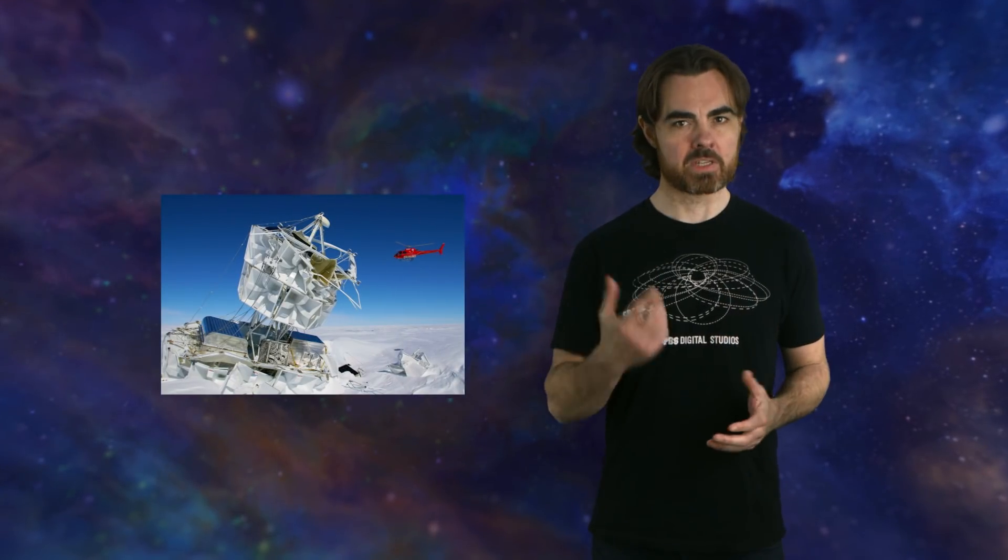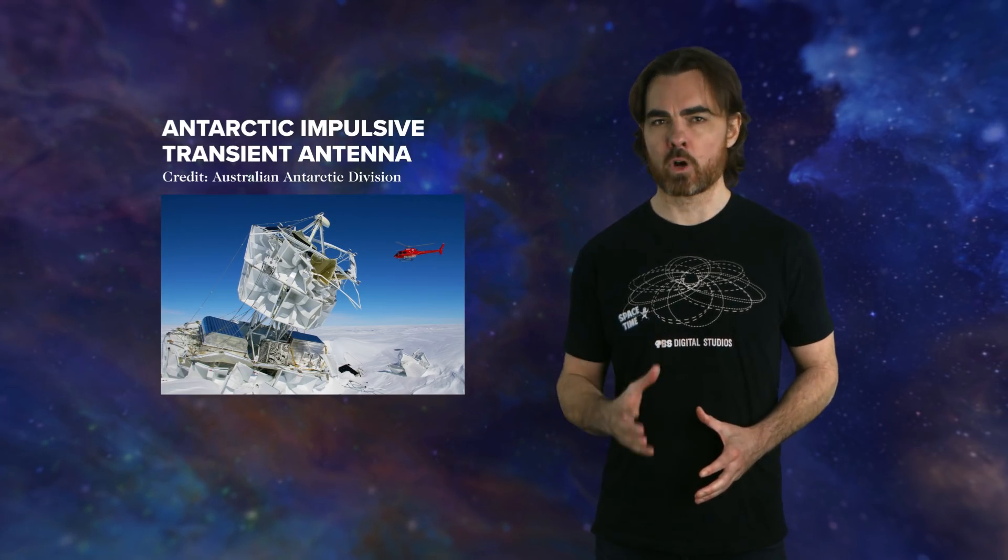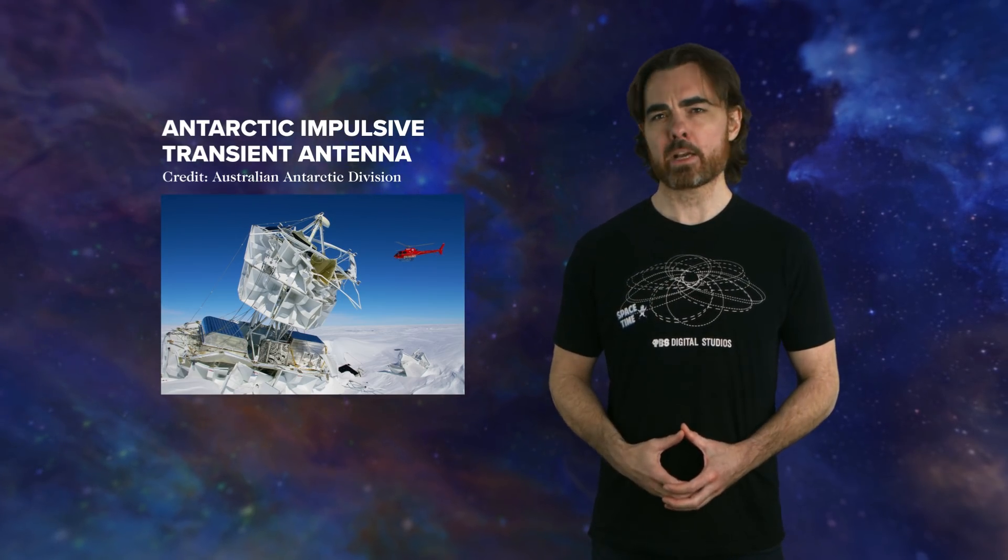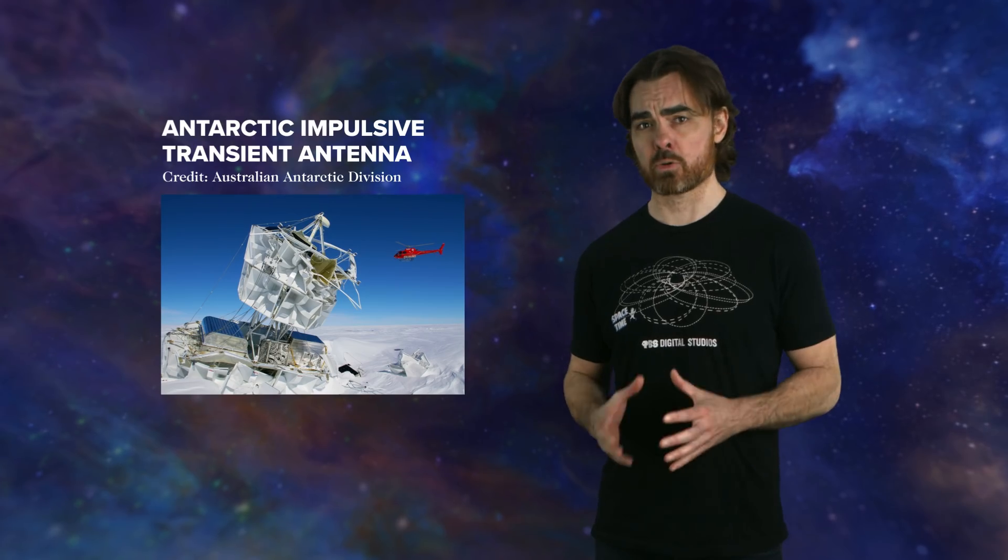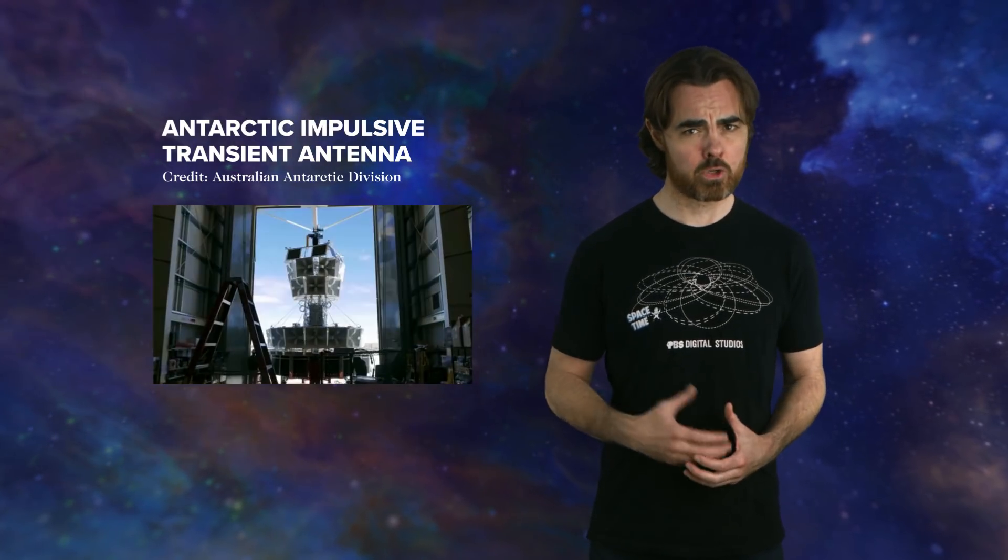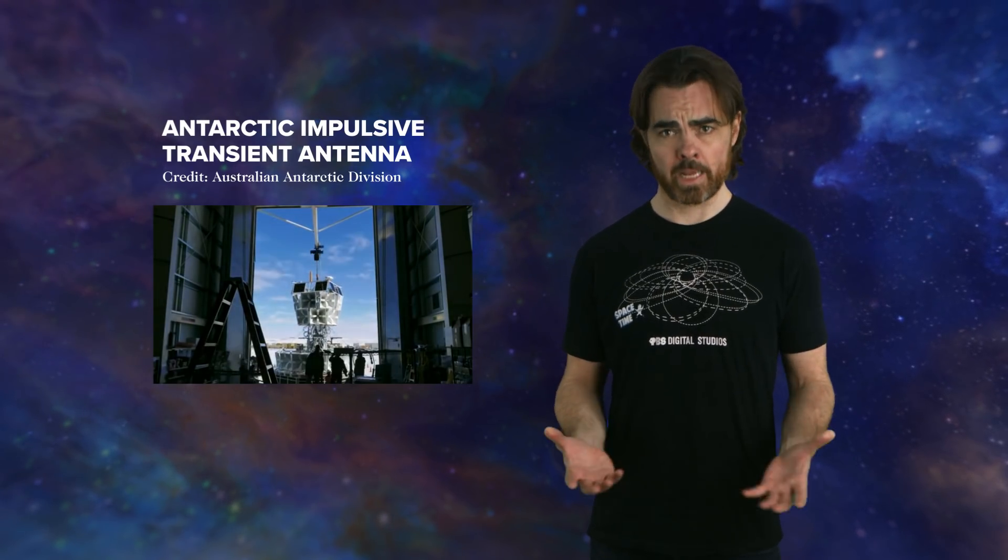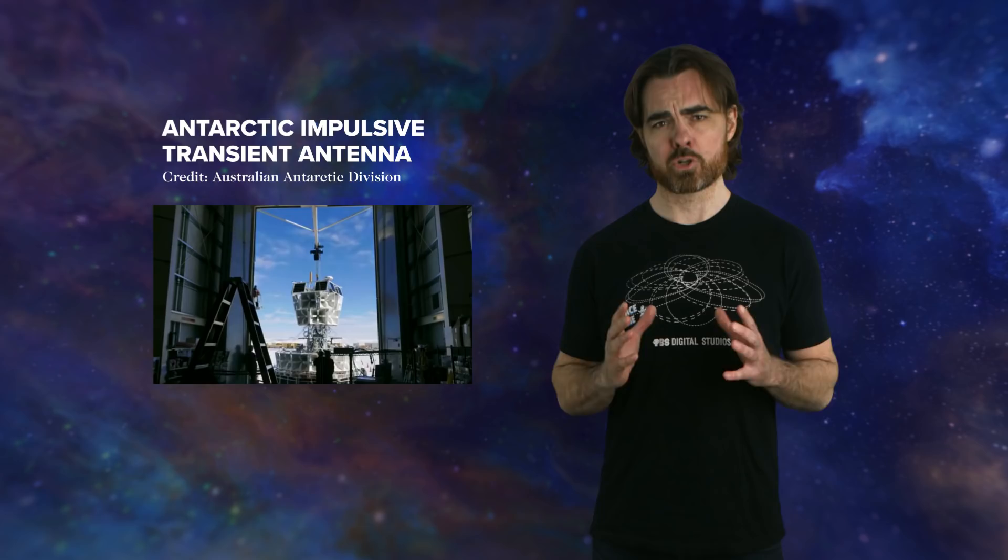Let's talk about this thing. No, it's not a downed imperial probe droid. Your rebel base is safe. This is ANITA, the Antarctic Impulsive Transient Antenna. It's a cosmic ray experiment of a very special sort. In fact, it's a cosmic ray detector disguised as a neutrino detector disguised as a radio antenna, disguised as a hot air balloon. Probably I should explain that.